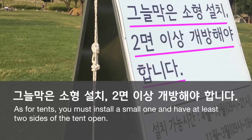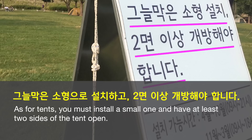So altogether, 그늘막은 소형 설치, 이면 이상 개방해야 합니다 means: 'As for tents, you must install a small one and have at least two sides of the tent open.' It would be a better sentence if it were 그늘막은 소형으로 설치하고 이면 이상 개방해야 합니다, but I understand they wanted to keep the sentence very short.